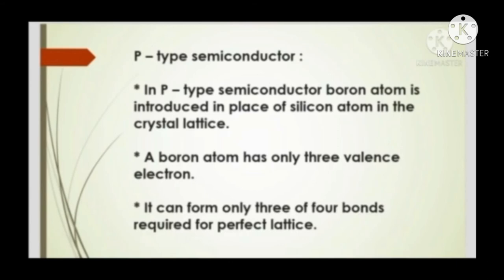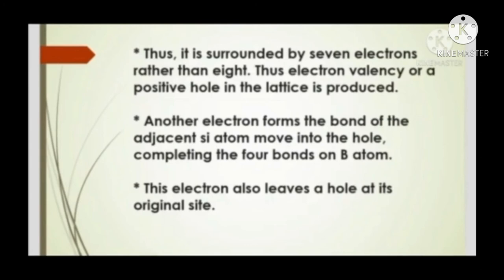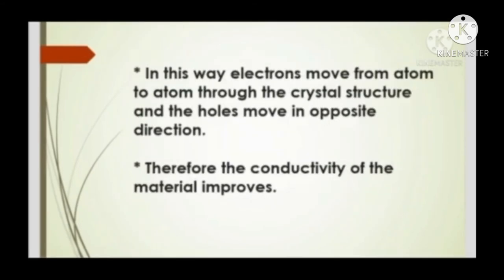P-type semiconductor: A boron atom is introduced in place of a silicon atom in the crystal lattice. Boron has only three valence electrons, so it can form only three of the four bonds required for a perfect lattice. Thus it is surrounded by seven electrons rather than eight, creating an electron vacancy or positive hole in the lattice. Another electron from an adjacent silicon atom moves into the hole, completing the four bonds of boron. The hole moves in the opposite direction to the electron, improving conductivity.